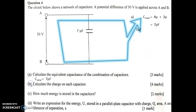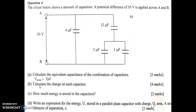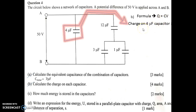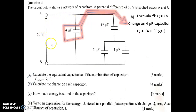Next, question B: calculate the charge on each capacitor. We use the formula Q equals CV. First, the charge on the 4 µF capacitor. From Q equals CV, the capacitance is 4 µF and the voltage across it is 50 V. So 4 times 50 gives us 200 µC.